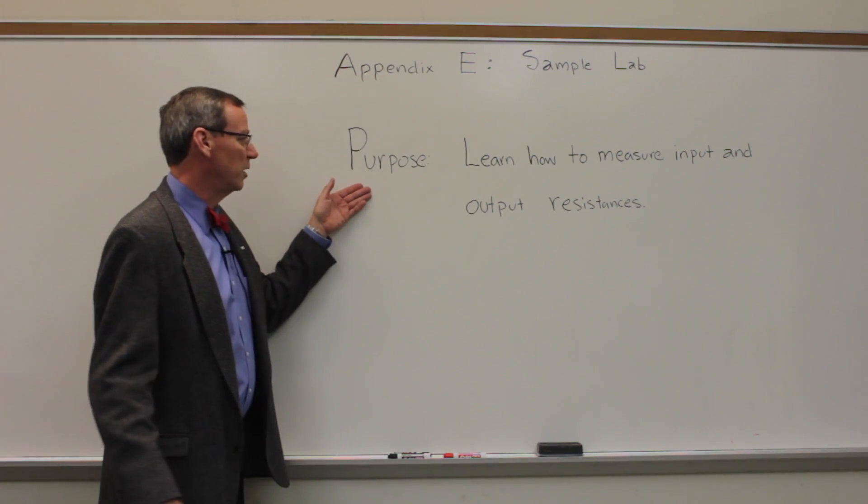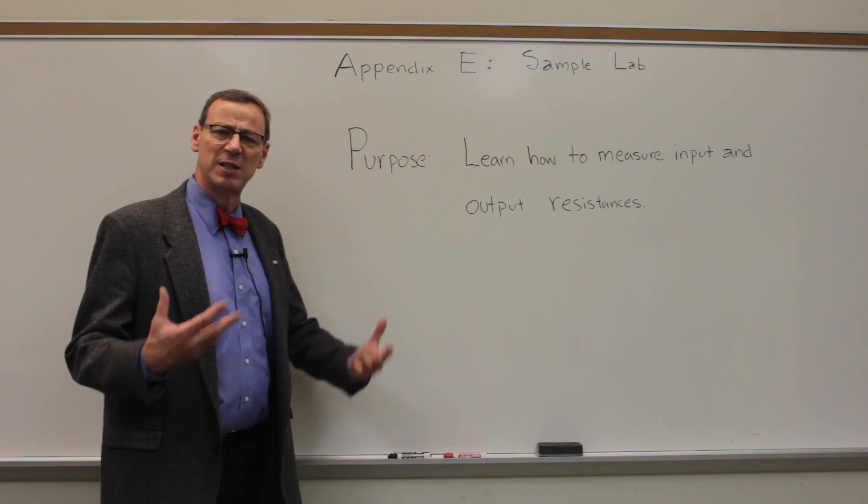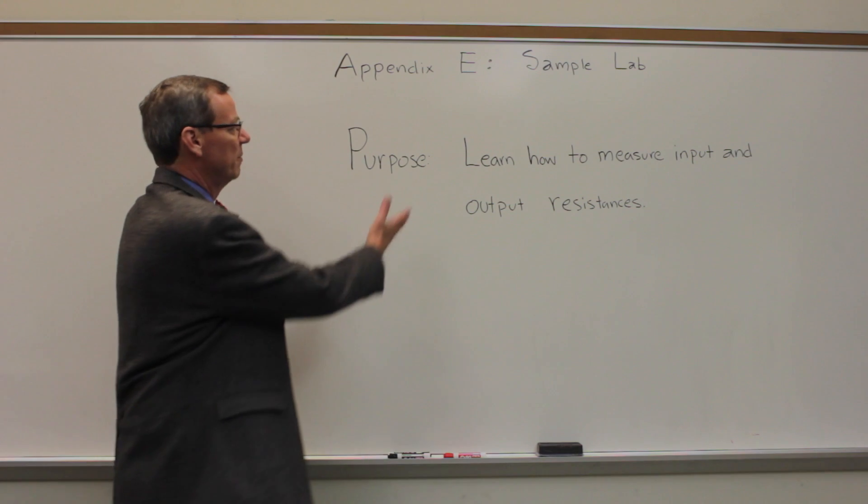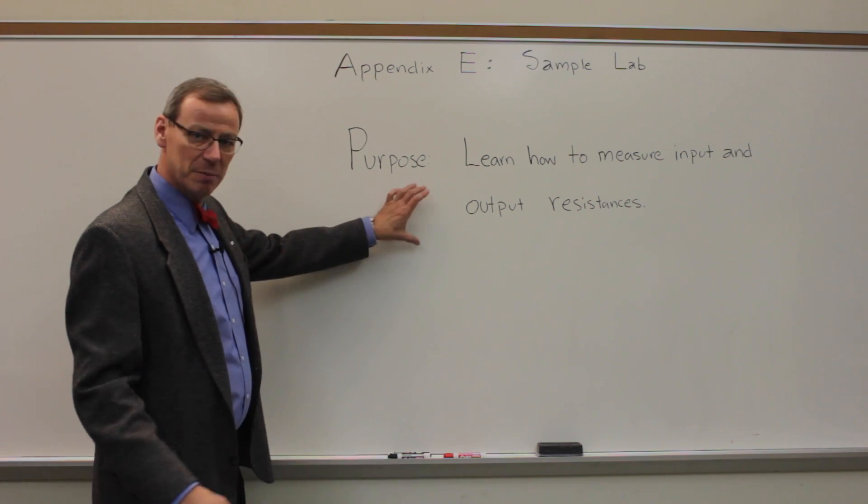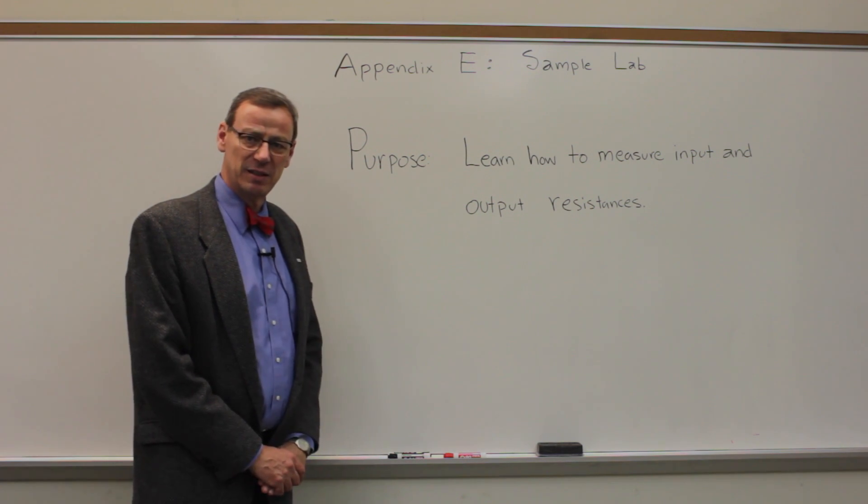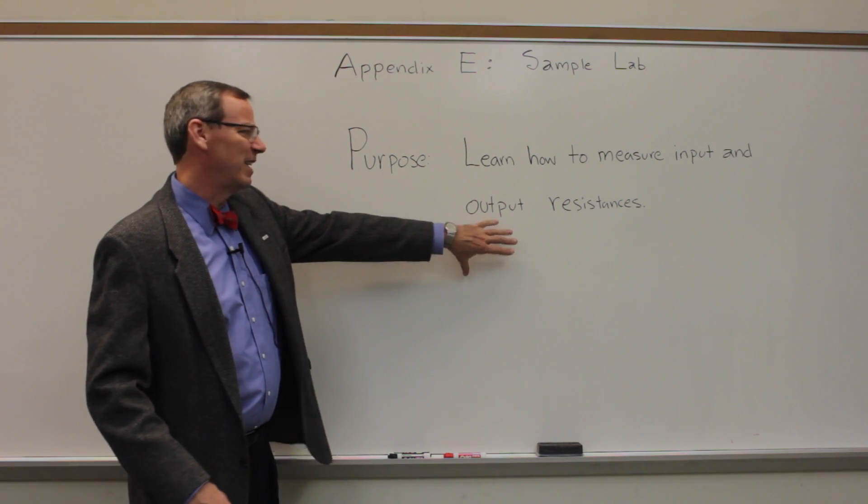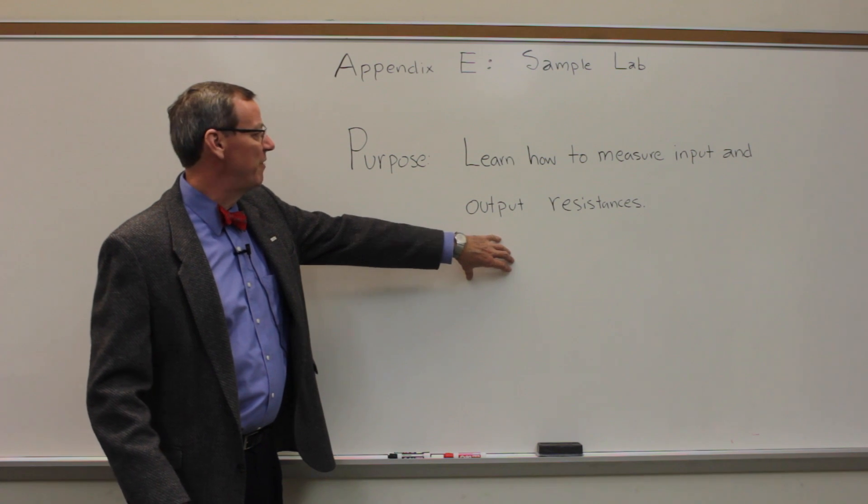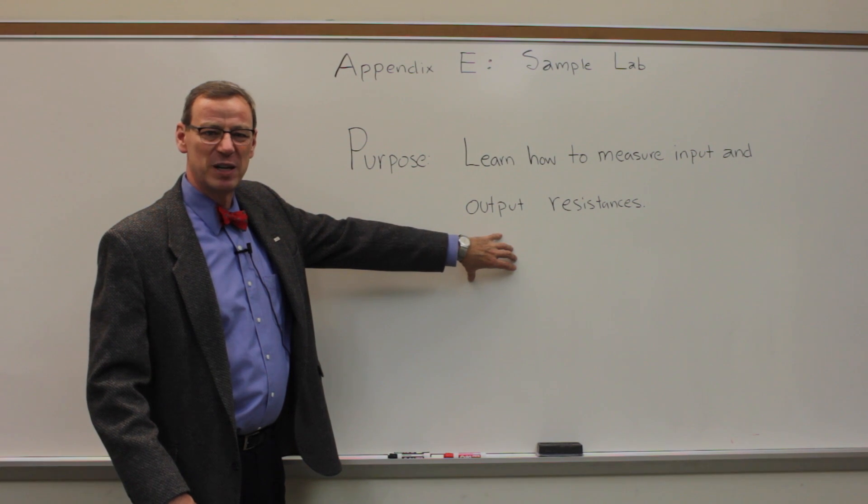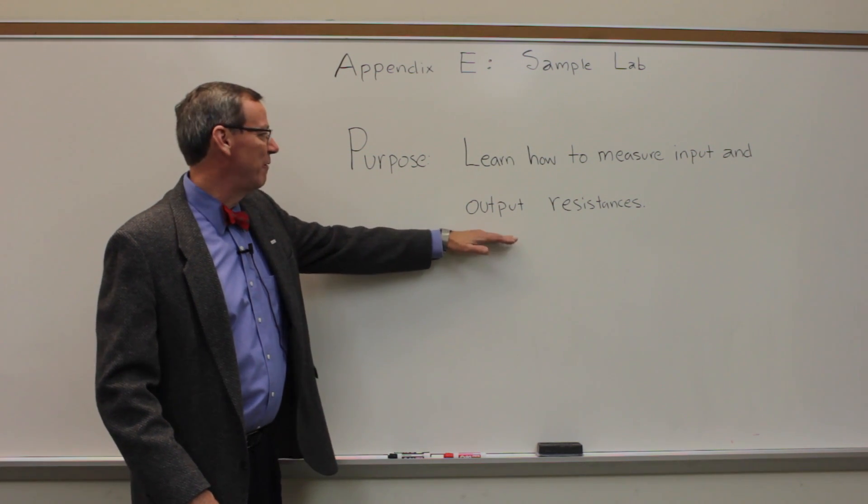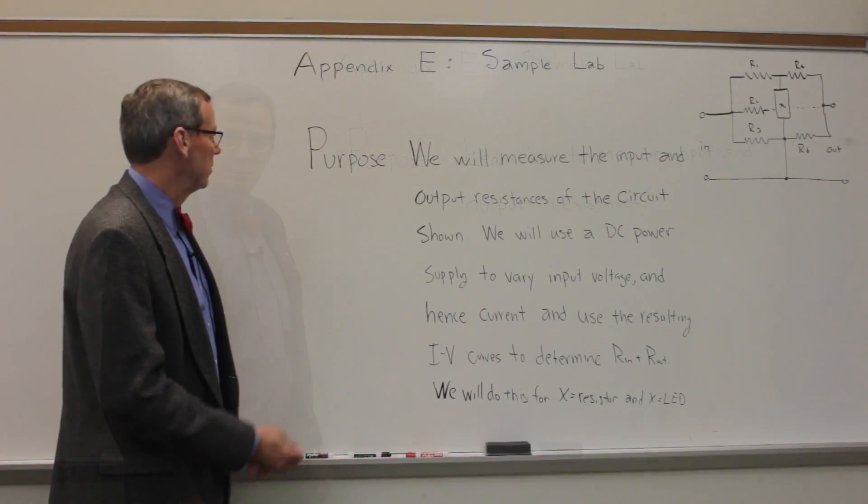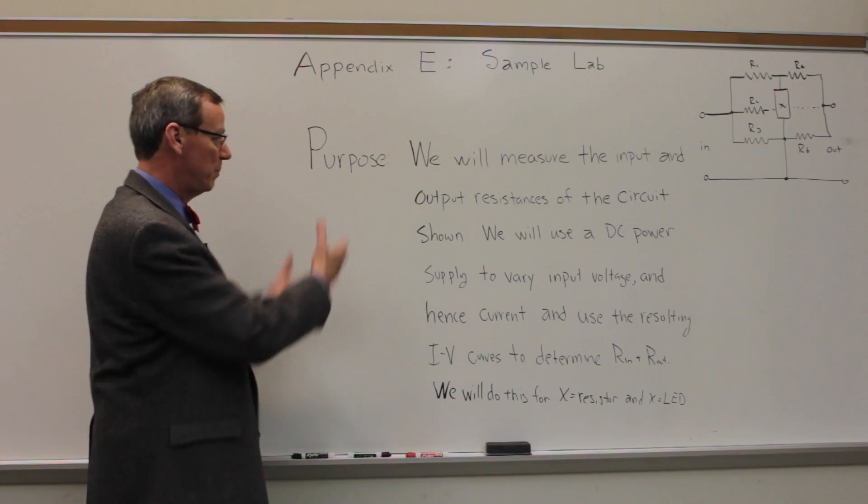So we start, all the labs start with a purpose, which basically describes what are the goals of this lab, what are we trying to learn. And this might be something that you would write down about this sample lab if you read through it, which is learn how to measure input and output resistances. Now if we look at that, that doesn't tell us an awful lot. It's pretty vague. Input and output resistances of what? What is the purpose of that? What are we going to do with that? Actually we should probably add a little bit more information than what we've got there.